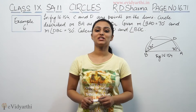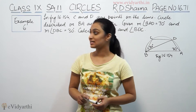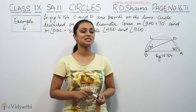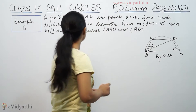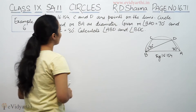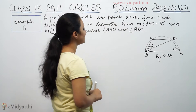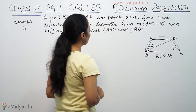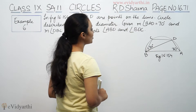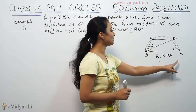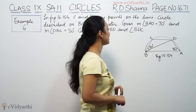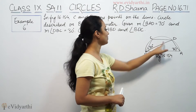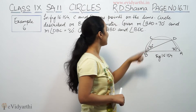Hi, this is Kushpoo with another question on circles. This is example number 6 from R.D. Sharma, page number 16.7. The problem states: C and D are points on the semicircle described on BA as diameter. Given that angle BAD is 70 degrees and angle DBC is 30 degrees.